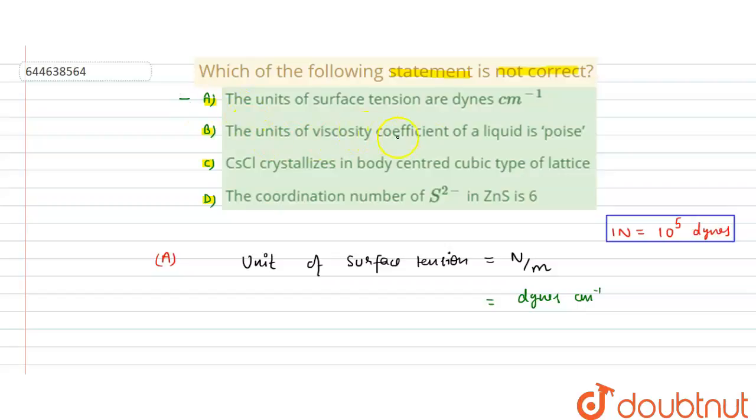Now we check B: the unit of viscosity coefficient of a liquid is poise. Yes, this is also correct.